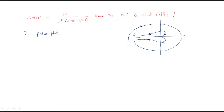The initial path starts from here and ends here. After that, the replica starts from here and ends here. The path continues: start from here, end here, and the ending point connects back. We have the minus 1 plus j0 point located somewhere here. The Nyquist plot is now completed from the polar plot.